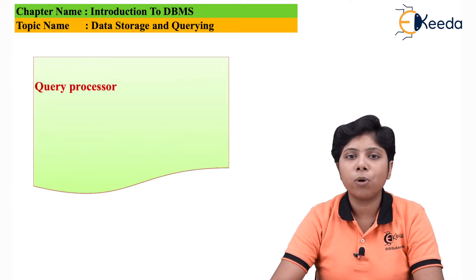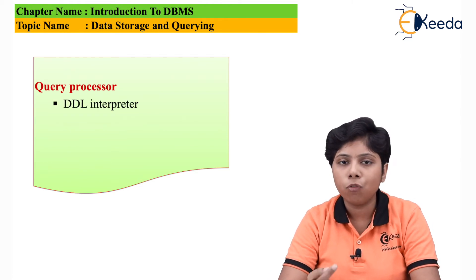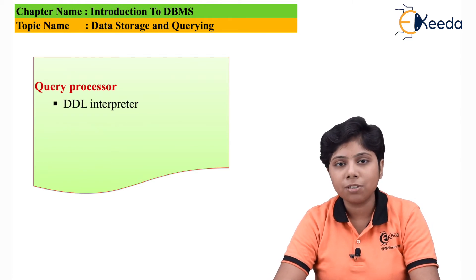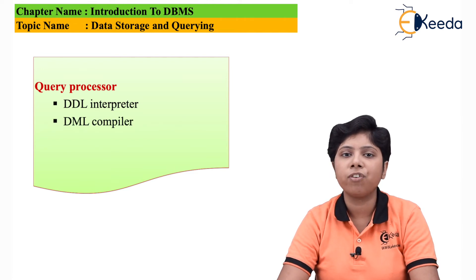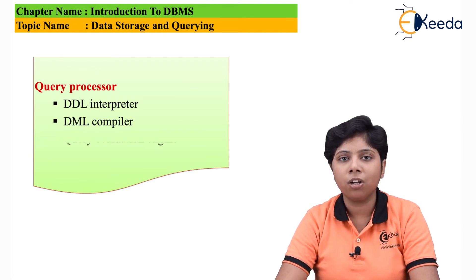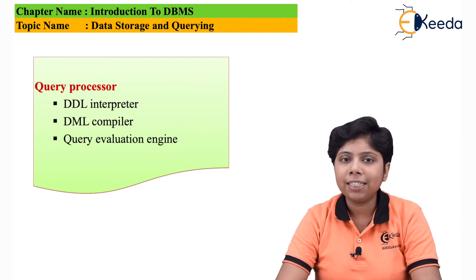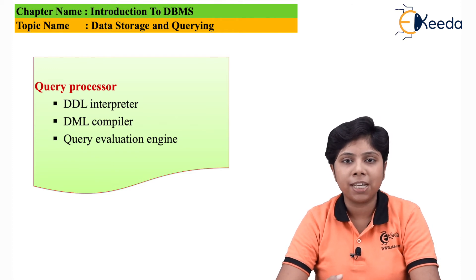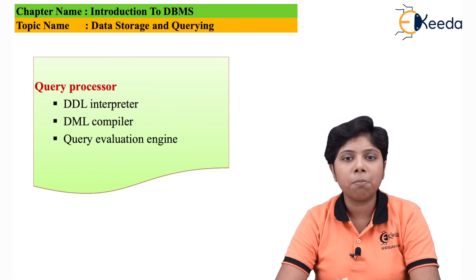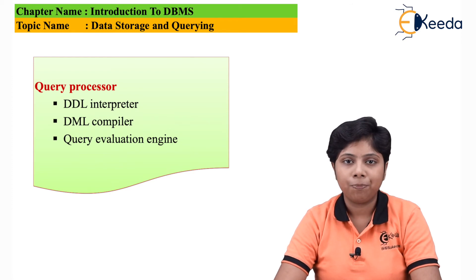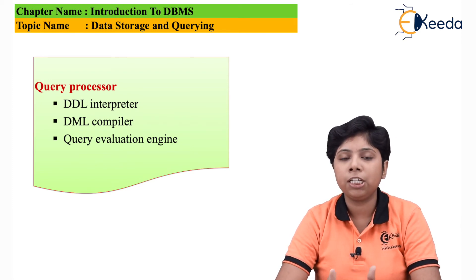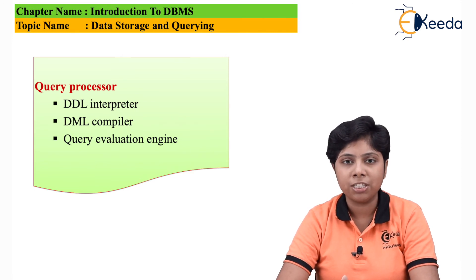Next, we move to query processing. We store and maintain a database for one purpose: so that the user and the administrator can get the data whenever they need it in a meaningful and organized way. Getting the data is known as querying. When query processing occurs, we need to convert the query into a machine-level standard that the query evaluation engine can understand and then execute.